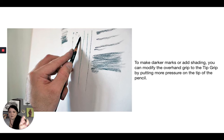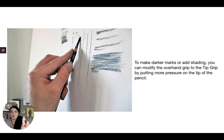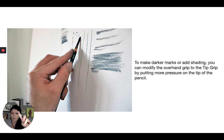The last one is what I call tip grip. It's basically the overhand or underhand grip but you're putting your index finger right up on the tip of the lead. It's good when you need to make darker marks — our graphite is a little fragile since we've stripped all the wood away — so if you need to really press down and create darker values and shading, this grip is very good for that.